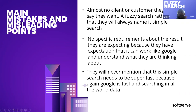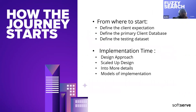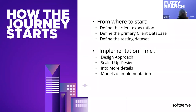So let's start again to talk about step-by-step how we can avoid these mistakes and start doing this the correct way. From the beginning, we should define the client expectation, define his primary database, define the data set. When we go to implementation time, we should think about the design approach, what if we need to scale up the design. We will discuss model implementations — what type of implementations we can go through for this type of requirement.